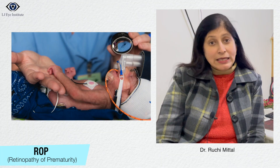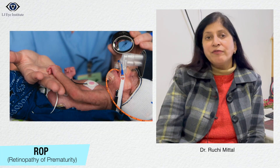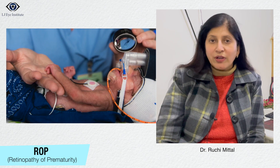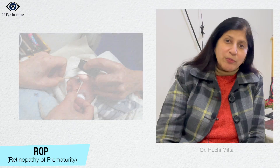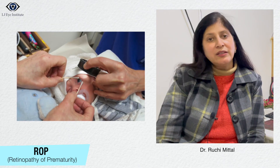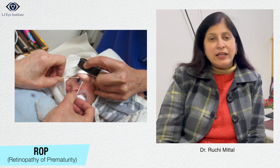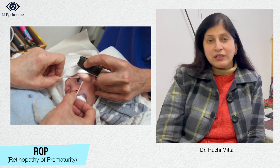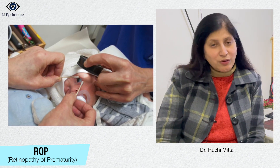ROP happens in infants who are born less than 34 weeks of gestational age or whose birth weight is less than two kilograms. These children who are born before time — their retinal development happens outside the mother's womb instead of inside, and it may not develop in the way as planned. That is why in these children sometimes vision does not develop properly or there is a risk of vision loss.